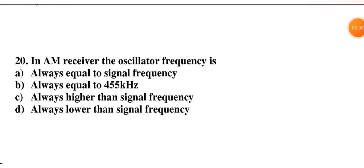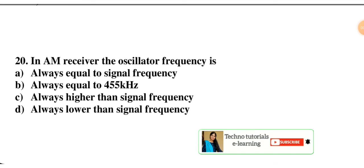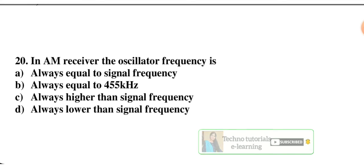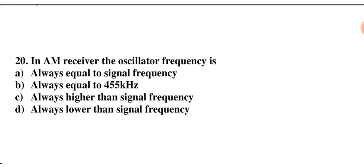In an AM receiver, the oscillator frequency is — always equal to signal frequency, always equal to 455 kHz, always higher than signal frequency, or always lower than signal frequency. The oscillator generates a high-frequency signal as the carrier, so the answer is C — always higher than the signal frequency.